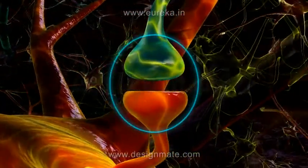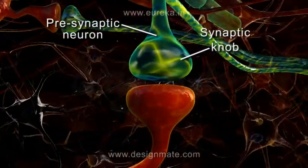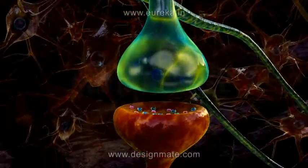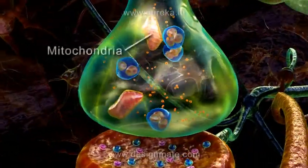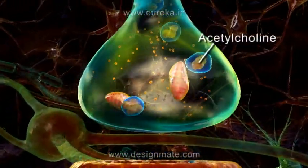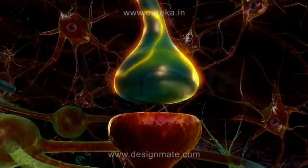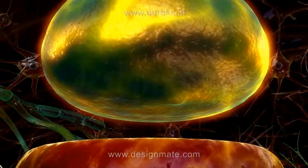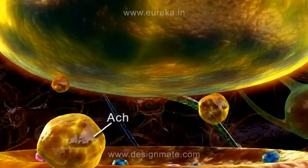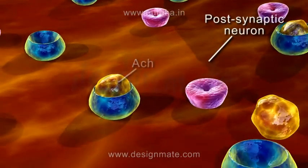The synaptic region shows the presence of a synaptic knob on the presynaptic neuron and a concavity on the postsynaptic neuron. When we observe the synaptic knob, we see the mitochondria and vesicles. These vesicles contain a chemical transmitter known as acetylcholine or ACh. As the impulse reaches the synaptic knob, acetylcholine is released. On reaching the postsynaptic neuron, it binds to the receptor and activates the postsynaptic neuron.